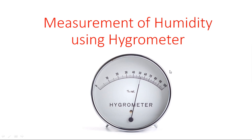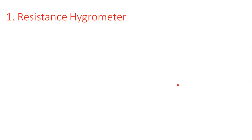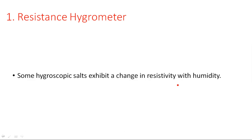This is how a hygrometer generally looks — it shows deflections from 0 to maximum, like 100, indicating humidity percentage. For example, 50 percent or 60 percent humidity is shown on the meter. Now, the first type is the resistive hygrometer, where depending on variations in humidity, the resistance of the device will vary.